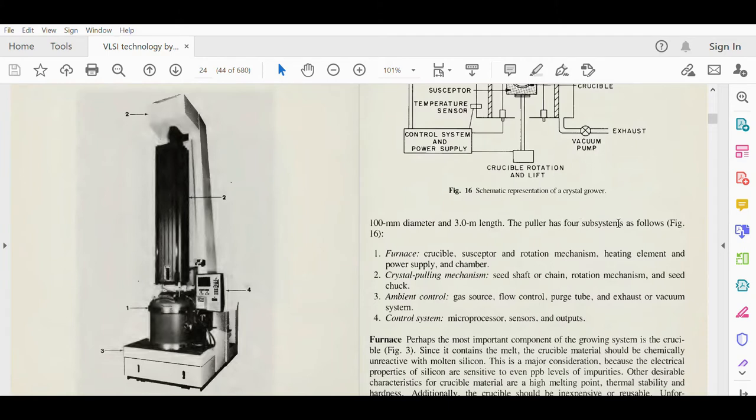The puller has four subsystems as shown in the figure. This is the schematic figure, this is the actual figure used in industry. To better understand the theory behind the actual practice, this schematic figure is drawn. Four different subsystems: furnace, crystal cooling mechanism, ambient control, and control system.